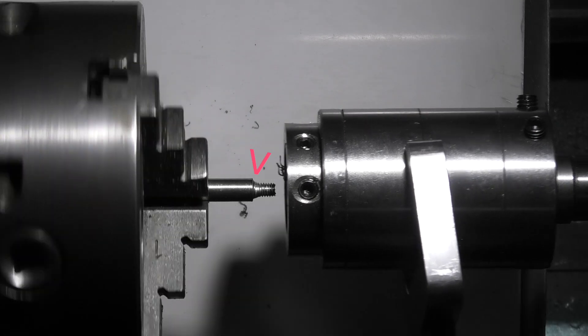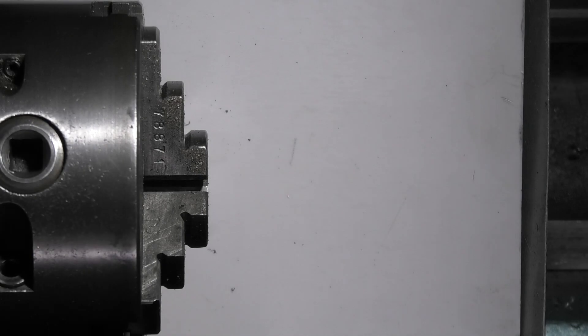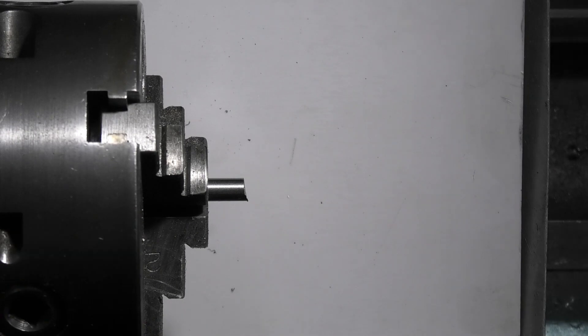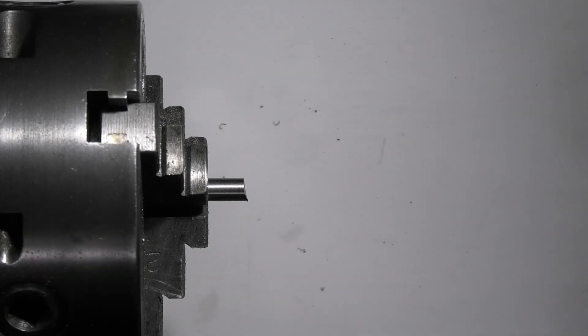I've just removed part of the shoulder with the die. Turn it round in the chuck. Just face this off square then I'll measure. See how much I've got left.